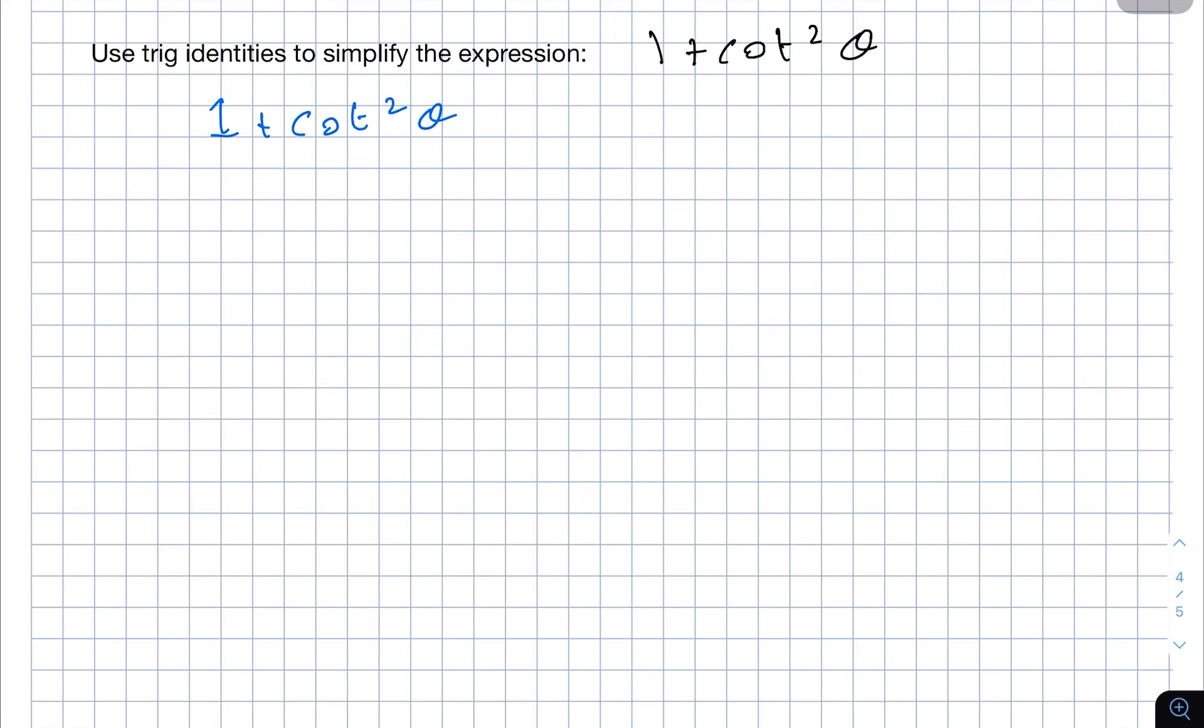And we need to simplify this. So the first thing we should know is that cot²θ equals cos²θ over sin²θ. So we can substitute this in here and we will get 1